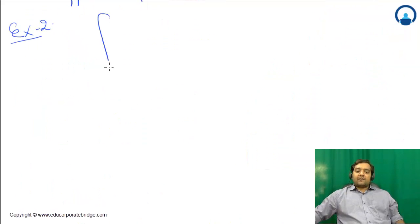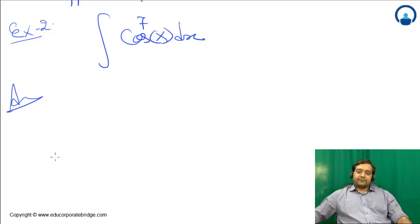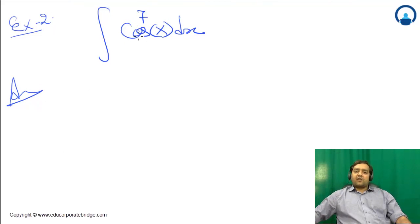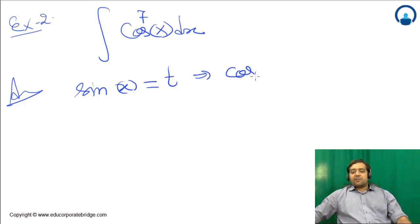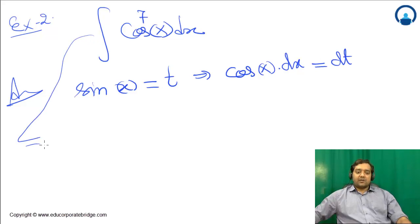Example 2: Suppose we have cos⁷(x)dx. What will we do? The odd power is cos, so put sin(x) = t.